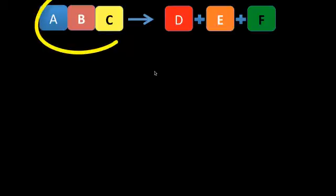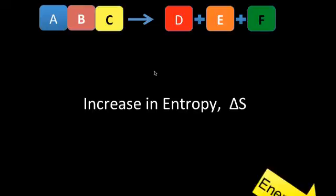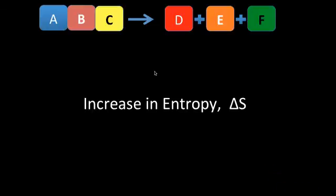Look at the sample reaction here. You can see already that the products are in a simpler form. In order to be that way, the stored energy in the bonds that are holding the reactants together had to be broken, releasing the energy into the environment. This increases the entropy of the system. In other words, getting the products to a lower energy state. And that follows the second law.